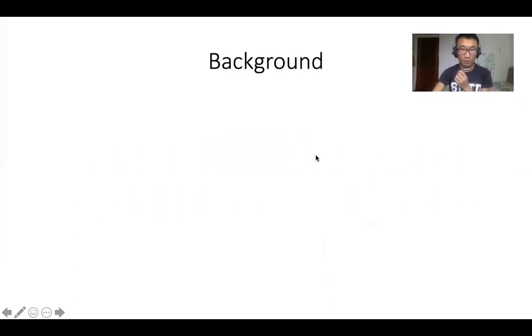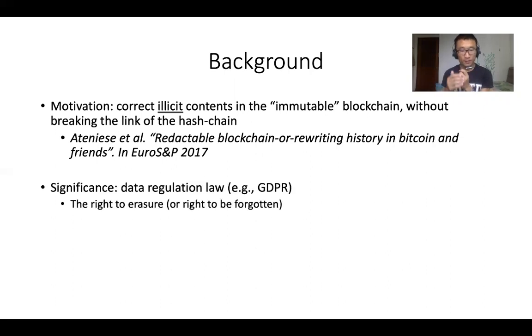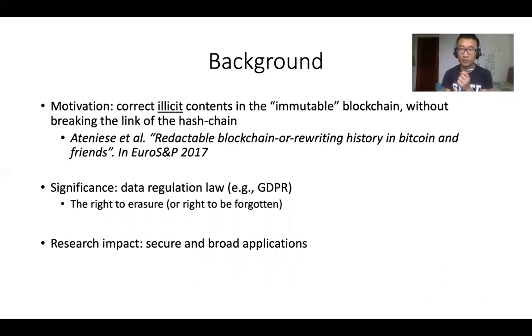Before I go to the proposal, let me briefly explain three research questions. First, what's the motivation of blockchain rewriting? Blockchain rewriting is used to correct or remove some illicit contents recorded in the blockchain without breaking the link of the hash chain. The illicit contents may include some compromised security cases or inappropriate video clips. This concept was introduced by Ateniese et al. in EuroS&P 2017. The second question is, how significant is this research? My answer is that blockchain rewriting is required in some data regulation laws such as GDPR. In GDPR, the user has the right to be forgotten. The last question is, what's the research impact? My answer is to enlarge the application domain.